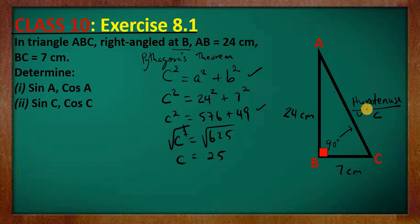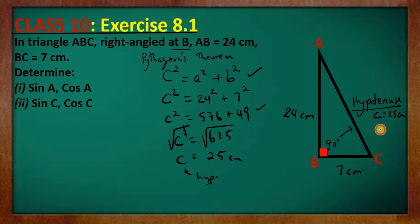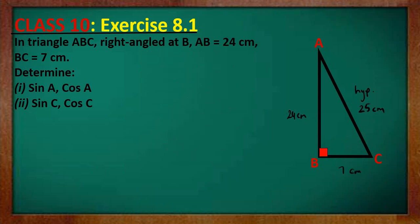So we just found the length of the hypotenuse, referred to as C from the Pythagorean theorem. The hypotenuse is 25 centimeters. So now we have 24 cm for side AB, 7 cm for side BC, and the hypotenuse AC is 25 cm, found using the Pythagorean theorem.